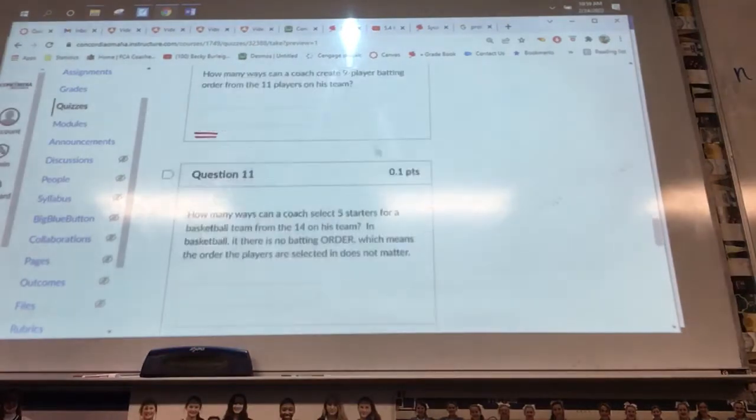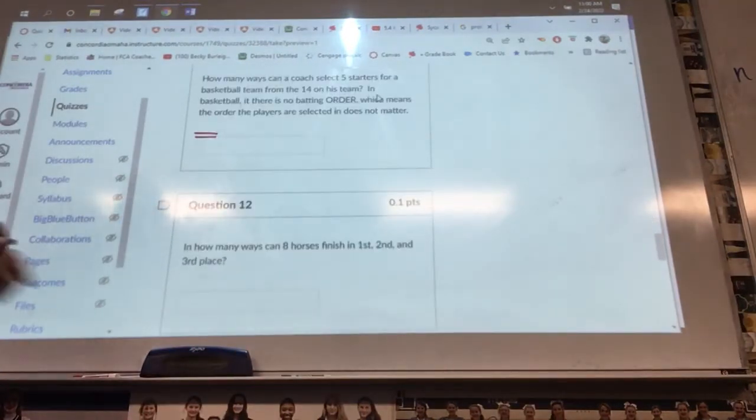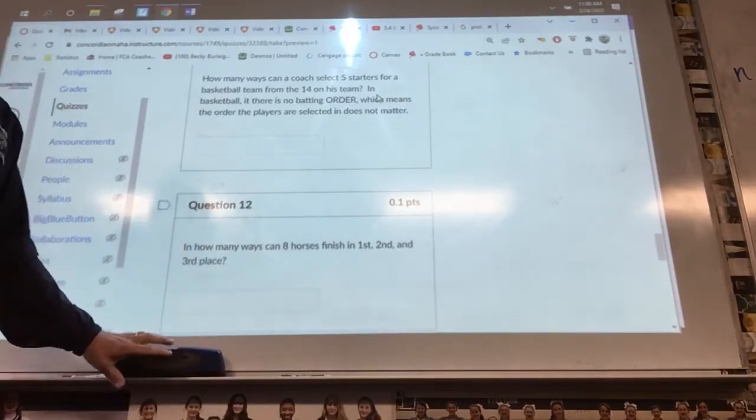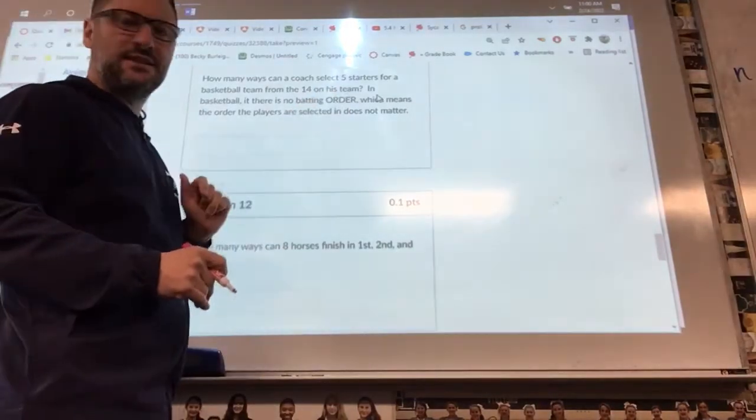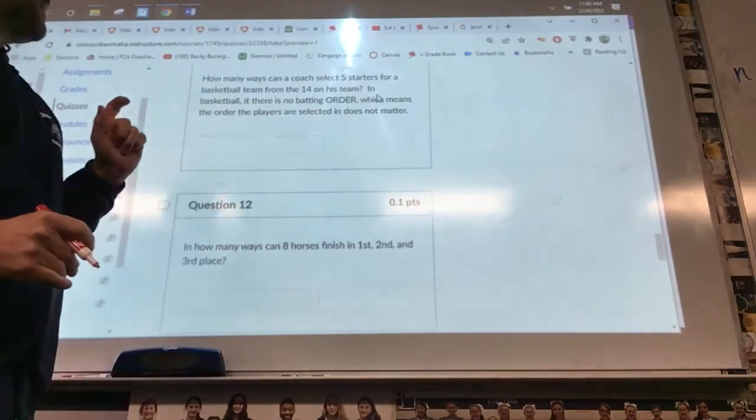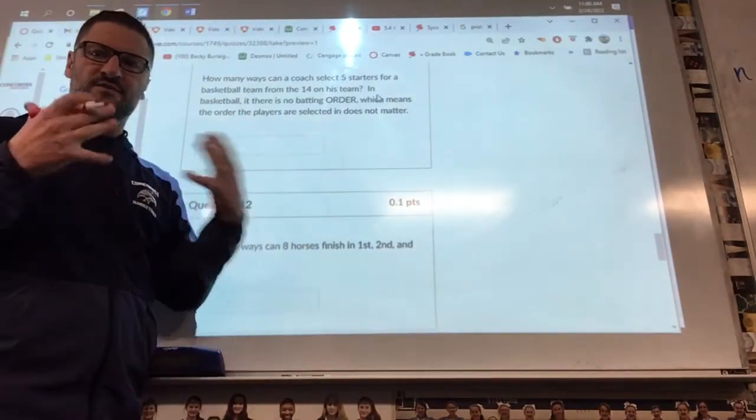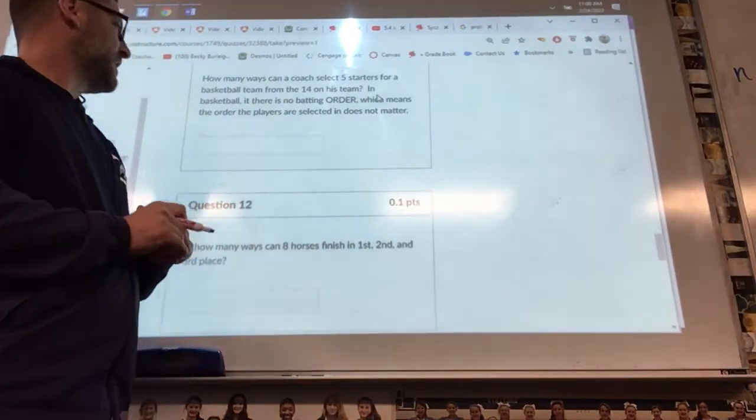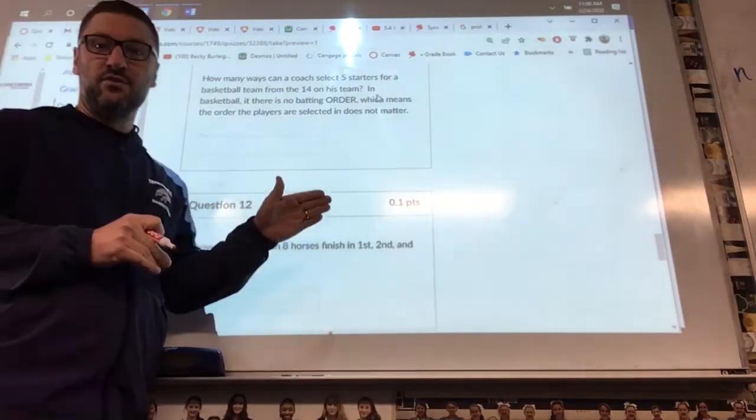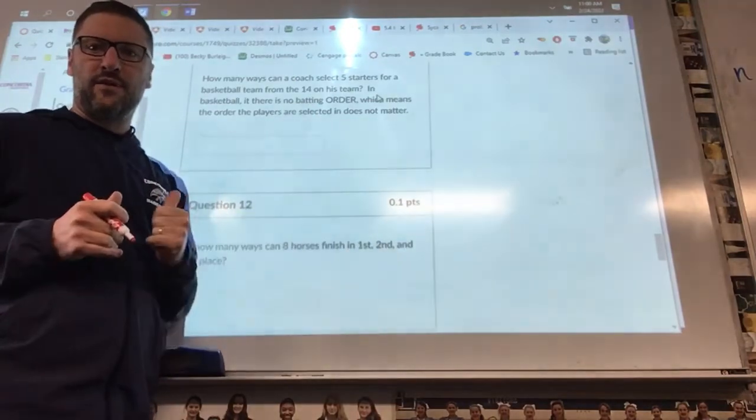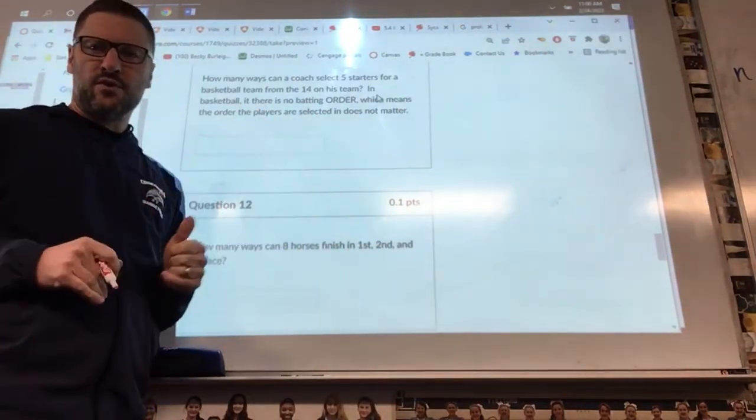Number eleven: how many ways can a coach select five starters for a basketball team from the 14 on his team? On your test, those might be different. But in basketball, there is no batting order. Order does not matter. It's just five people out on the court. So that would tell you to use either the nPr or nCr. You'll have to figure that out. But on this one, the order that they're out there doesn't matter.